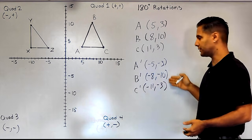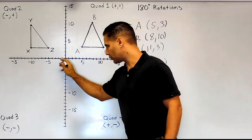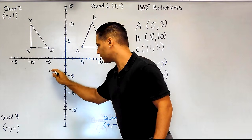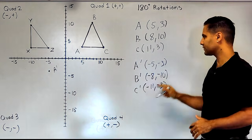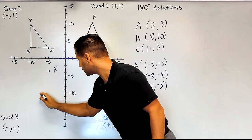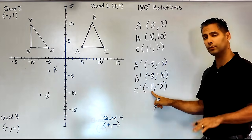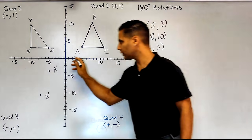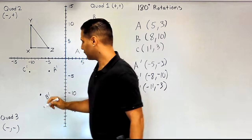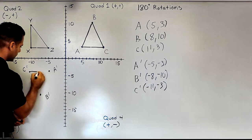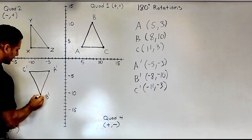Now let's identify the location of these new points. A is going to be at negative 5, negative 3 — so we go over 5 and down 3. For the new location of B, we go to the left 8 and down 10. And for the new location of C, we go to the left 11 and down 3, to negative 11, negative 3. Now if we connect these points, this will be our transformed shape — rotated 180 degrees around the origin.